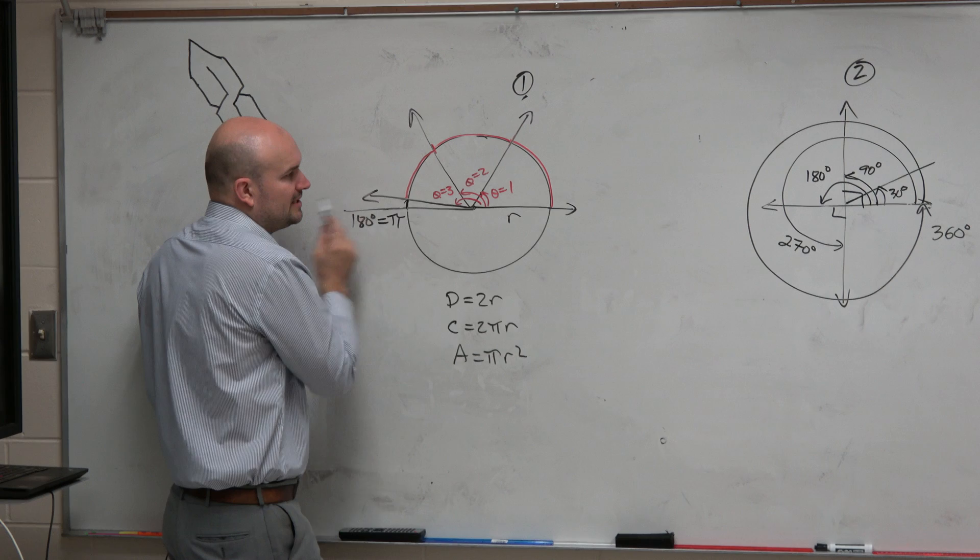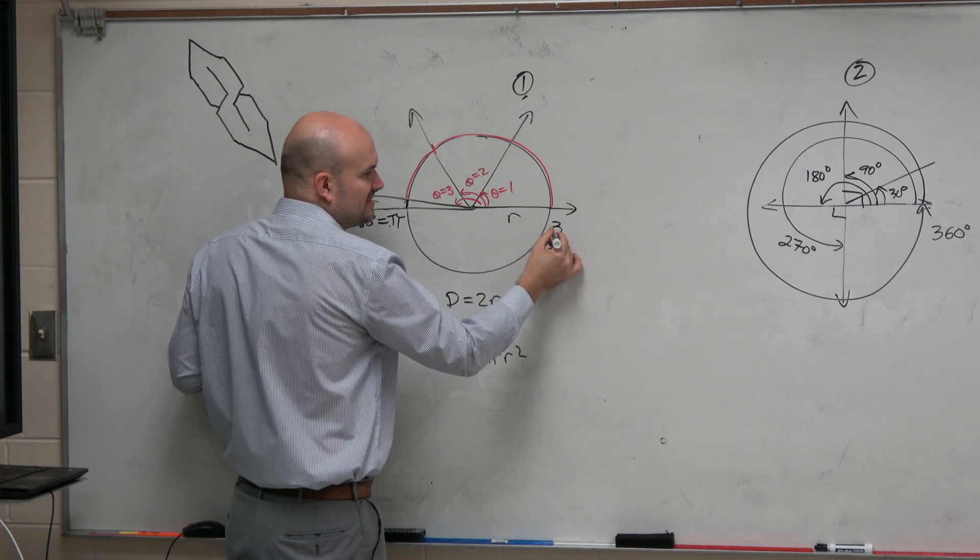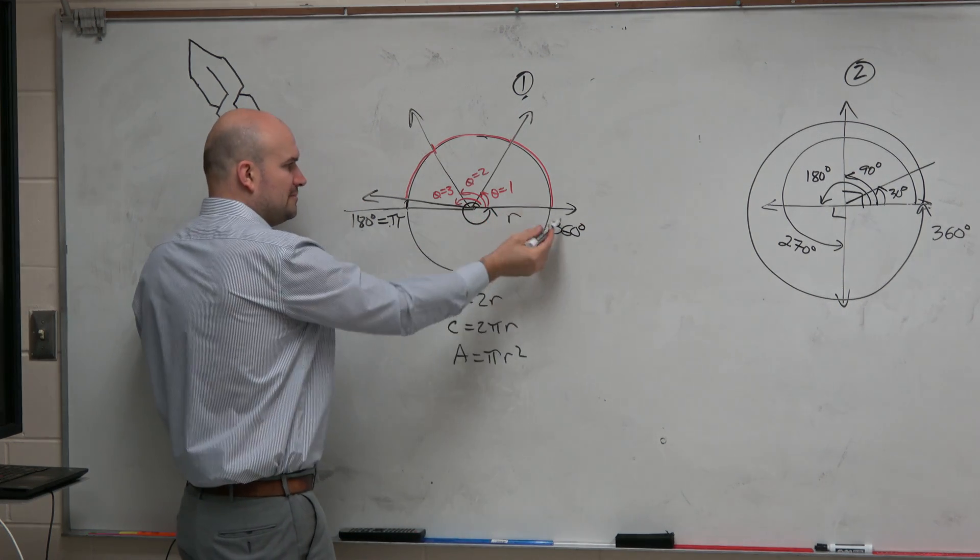And that's helpful, because if we know that 180 is equal to pi, and then we know that 360 degrees is all the way around a circle, well,